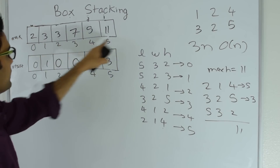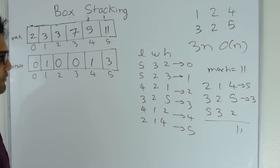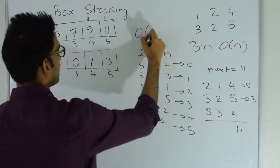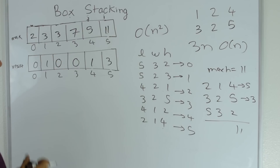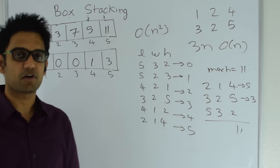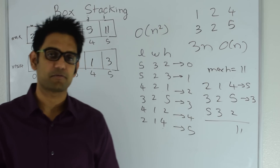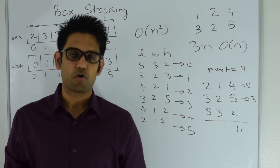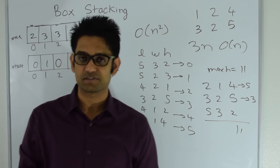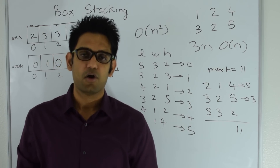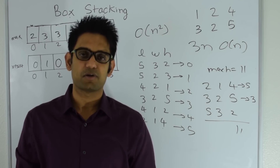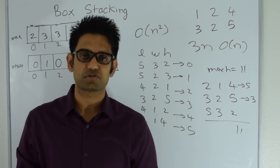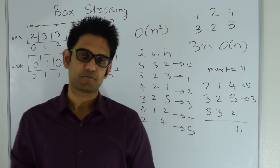Our space complexity is O(n) and our time complexity is O(n squared), because i moves forward and j iterates up to i for each step. To check the code for this problem, go to the description section where I have the link. Please like, share, comment, and subscribe to my YouTube channel youtube.com/user/tusharroy2525, and visit my GitHub at github.com/mission-peace/interview. Thanks for watching!